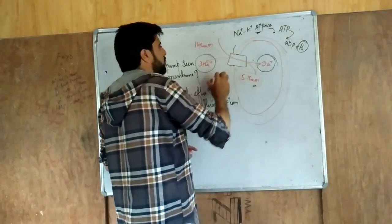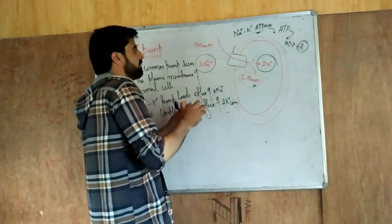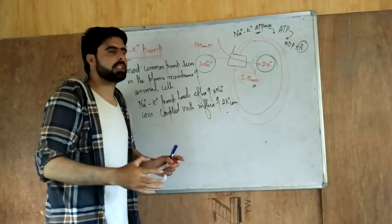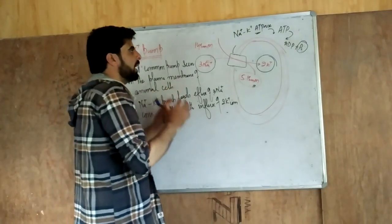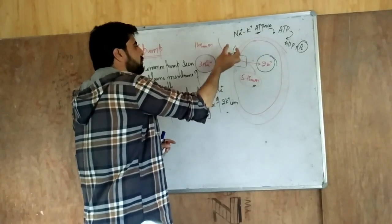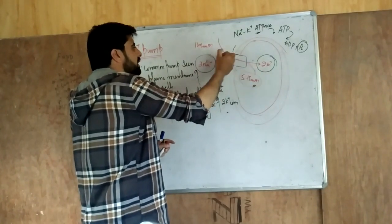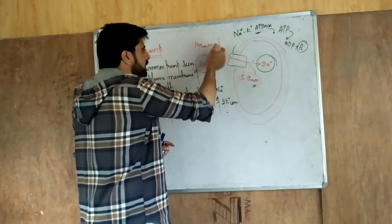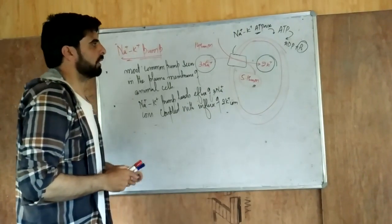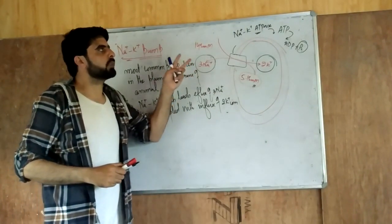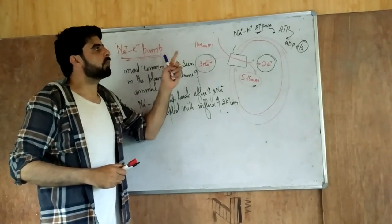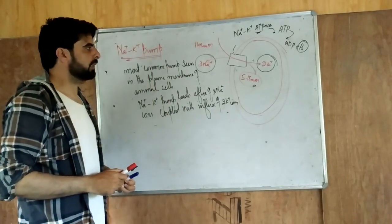Active transport is dependent on ATP and energy. The pump has ATPase activity — it breaks down ATP into ADP plus phosphate. That phosphate binds to the pump, leading to activation of the protein, which causes influx of 2 potassium ions and efflux of 3 sodium ions. So, the sodium-potassium pump is also known as sodium-potassium ATPase.